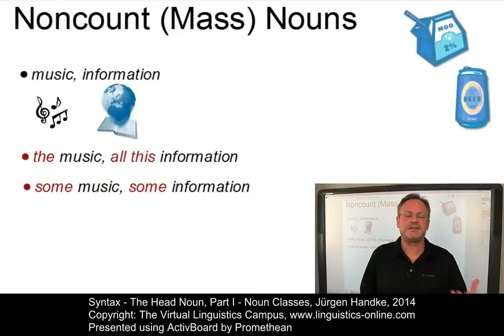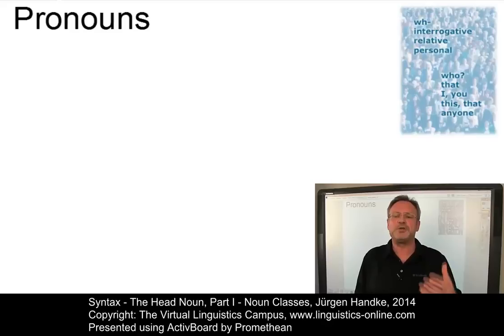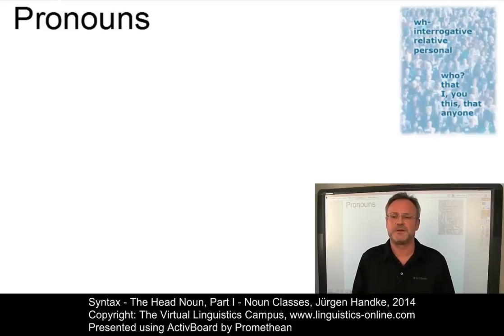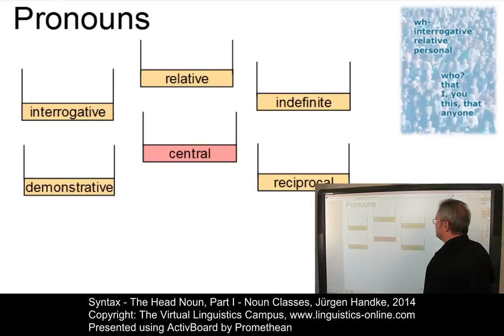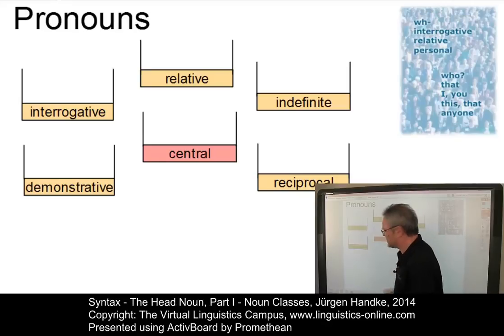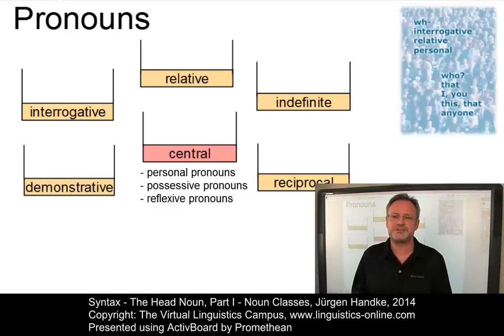Having dealt with the central head noun types, let us finally look at pronouns. In the extreme case, a noun phrase may consist of only one word — either an unmodified head noun or a pronoun. The latter belongs to a closed class of grammatical words and hence cannot normally be pre-modified. Formally, the following subclasses of pronouns are defined: interrogative pronouns, relative pronouns, indefinite pronouns, reciprocal pronouns, demonstrative pronouns, and then the class of central pronouns, which in turn consists of personal, possessive, and reflexive pronouns.